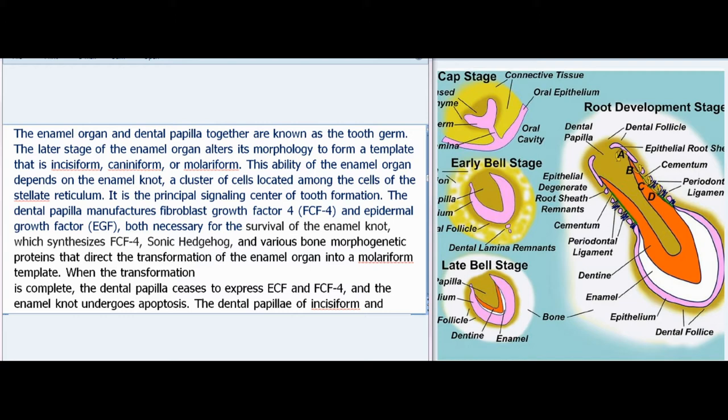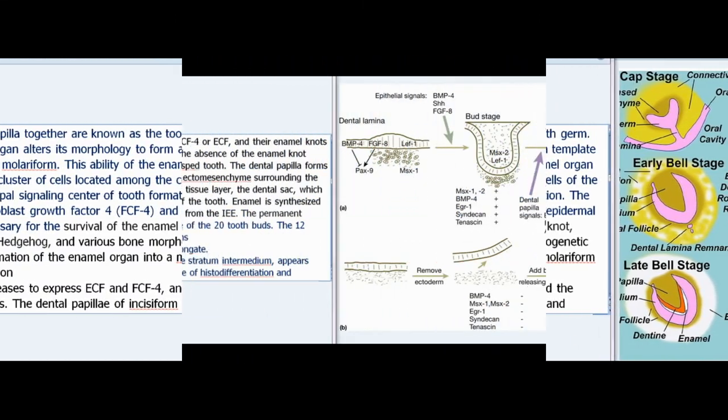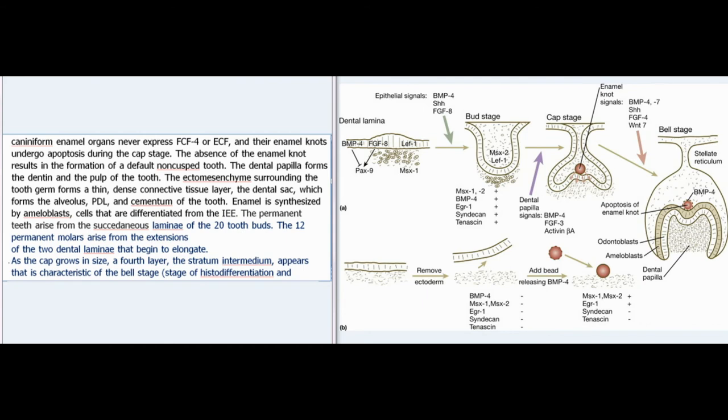When the transformation is complete, the dental papilla ceases to express EGF and FGF4, and the enamel knot undergoes apoptosis. The dental papillae of incisiform and caniniform enamel organs never express FGF4 or EGF, and their enamel knots undergo apoptosis during the cap stage. The absence of the enamel knot results in the formation of a default non-cusp tooth.